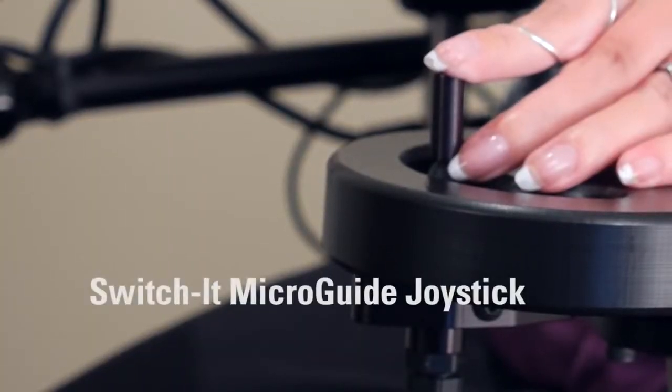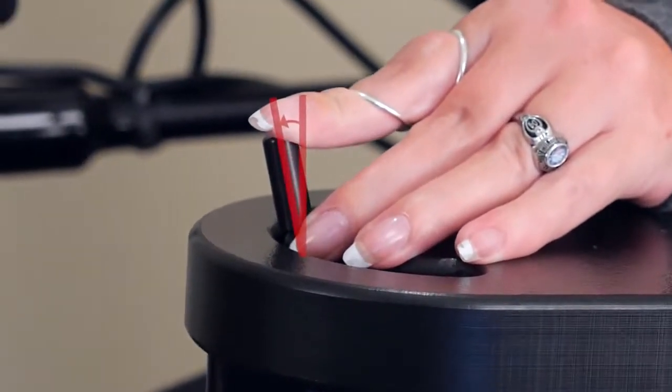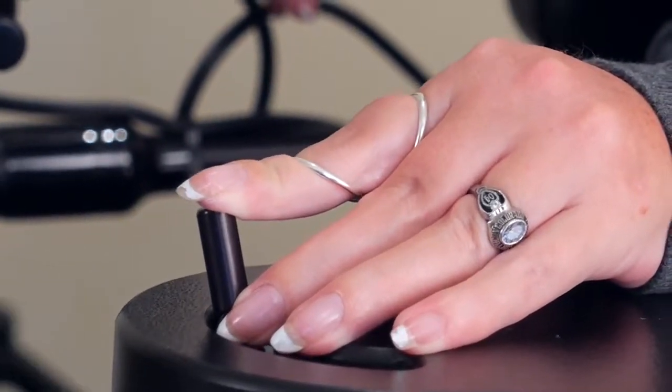The MicroGuide has the size and durability of the MicroPilot, but with the physical joystick throw or deflection for clients that prefer movement feedback for hand or chin applications.